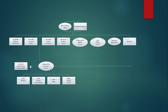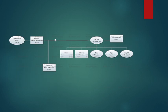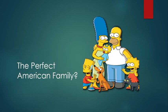Here's a closer look at them. You can see that we had a lot of chemical dependency, violence, and so forth. Does the perfect family exist in the United States? Probably not. If it did, maybe it's Homer and Marge and the kids.